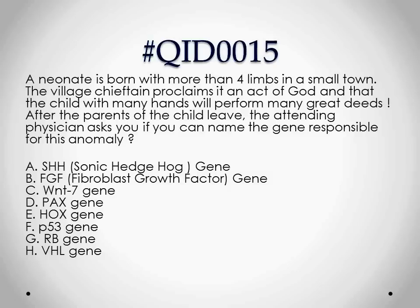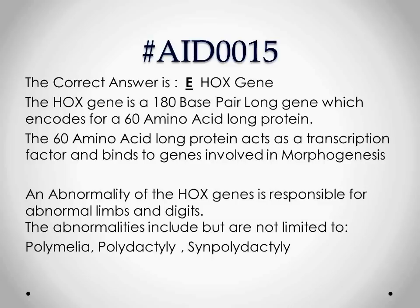Alright, so the answer to this question is E: the HOX gene. HOX is an acronym for homeobox. The homeobox gene is a 180 base pair long gene. As we know, one triplet — meaning three base pairs — translates into one amino acid, so a 180 base pair gene is going to encode 60 amino acids. This 60 amino acid long protein product of the homeobox gene forms a transcription factor.